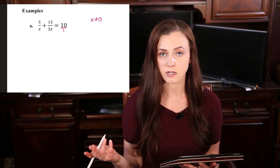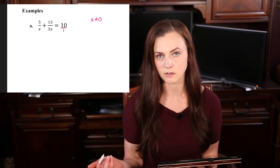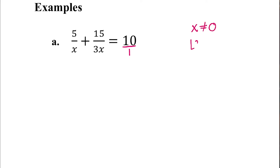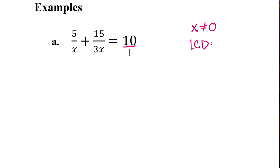So if we solved this question and we found that x equals 0, it would actually be no solution, because we have to compare it against those restrictions. The next thing we need to do is come up with our least common denominator. If we were going to get a common denominator between these three, well, I'm going to focus on the x and 3x. They have an x in common, but this one right here has a 3, so the least common denominator needs to be 3x.